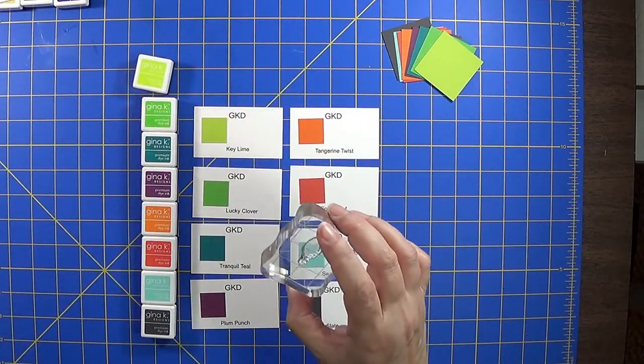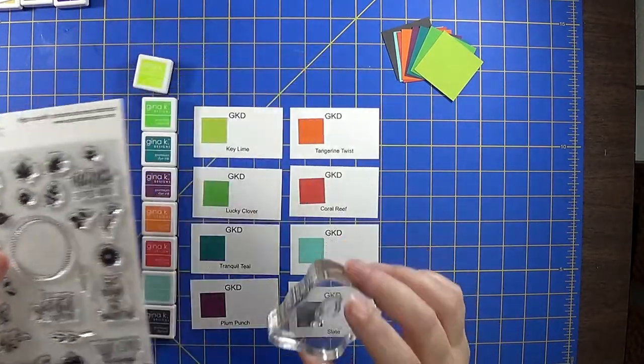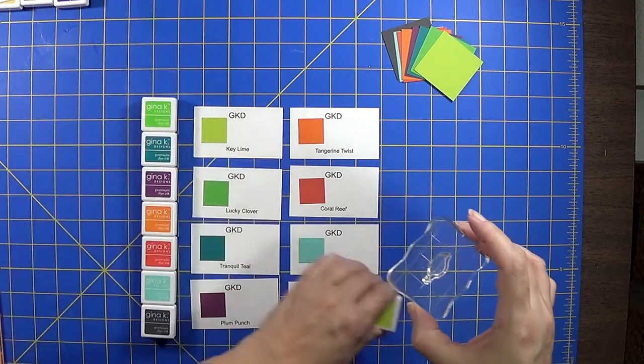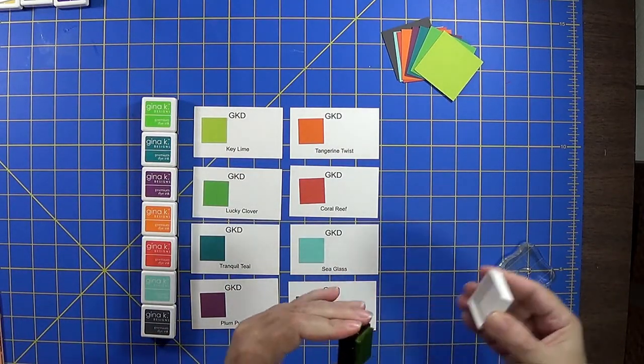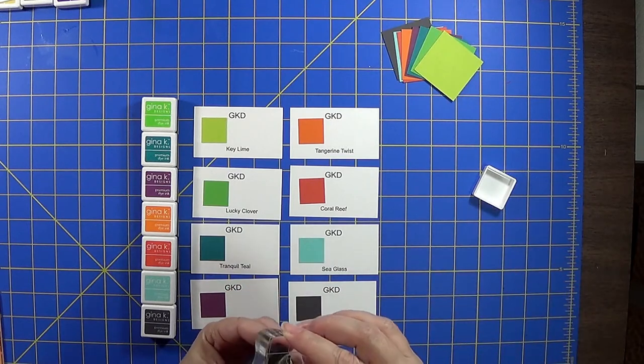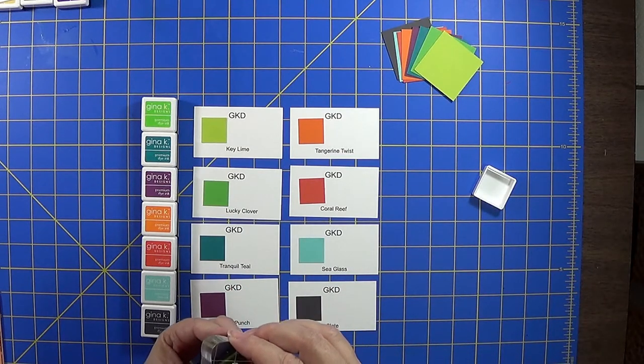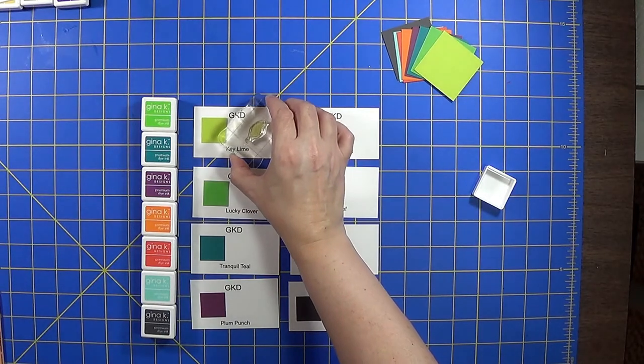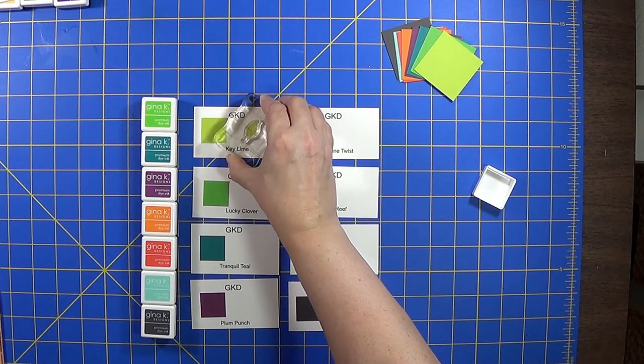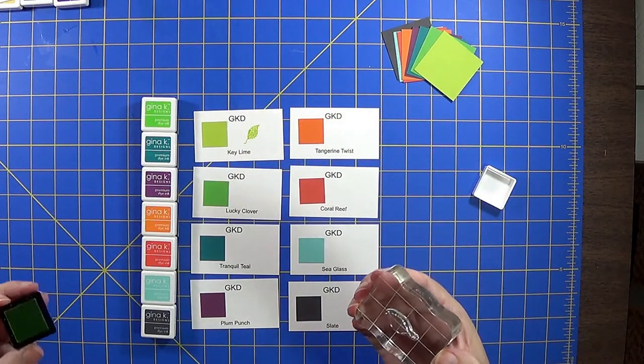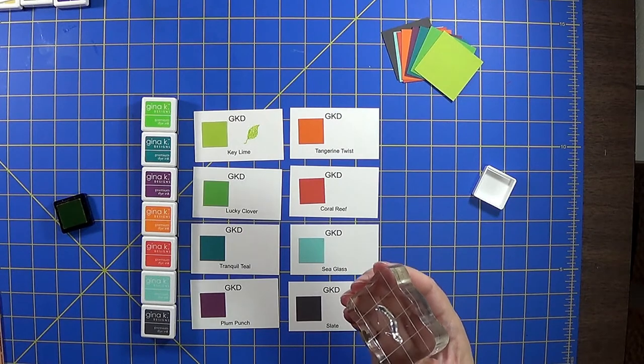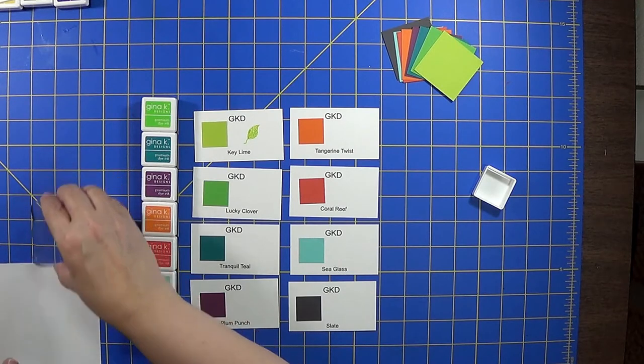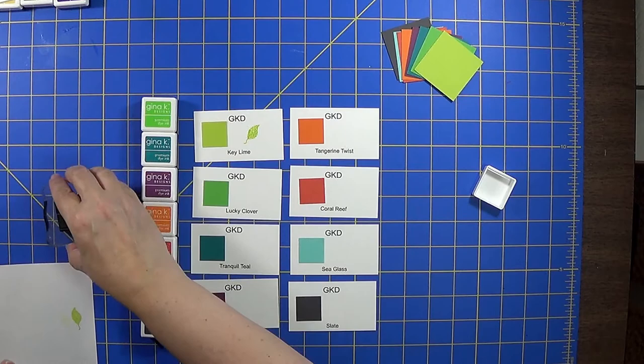And then I've taken from the older stamp set one of the solid, more solid images of a little leaf. And I'm going to use this to stamp the cubes. Ink up the stamp. Yeah but we're just going to go with it. What I need to do is condition the stamp. Oh that's much better.